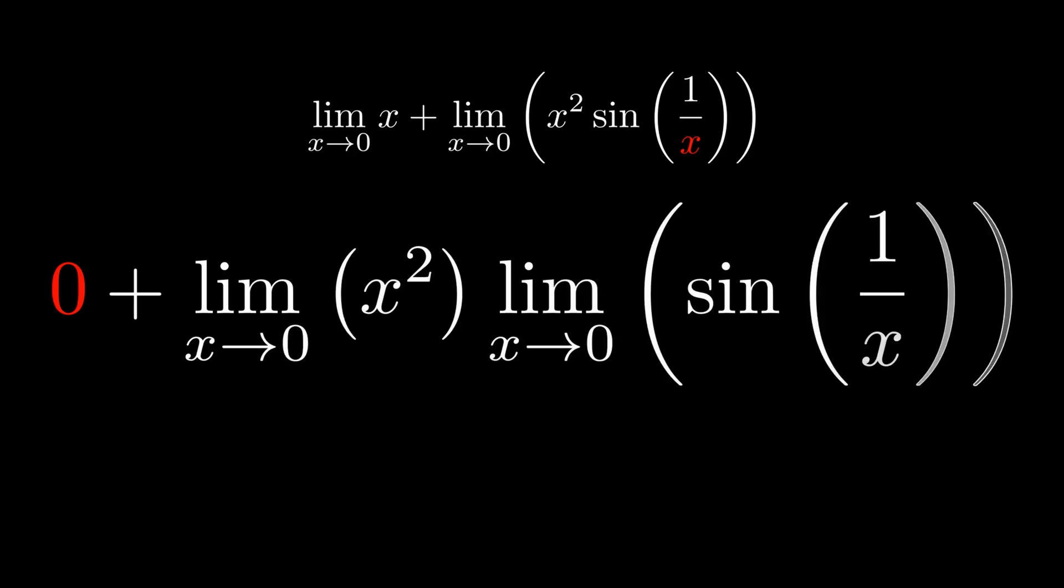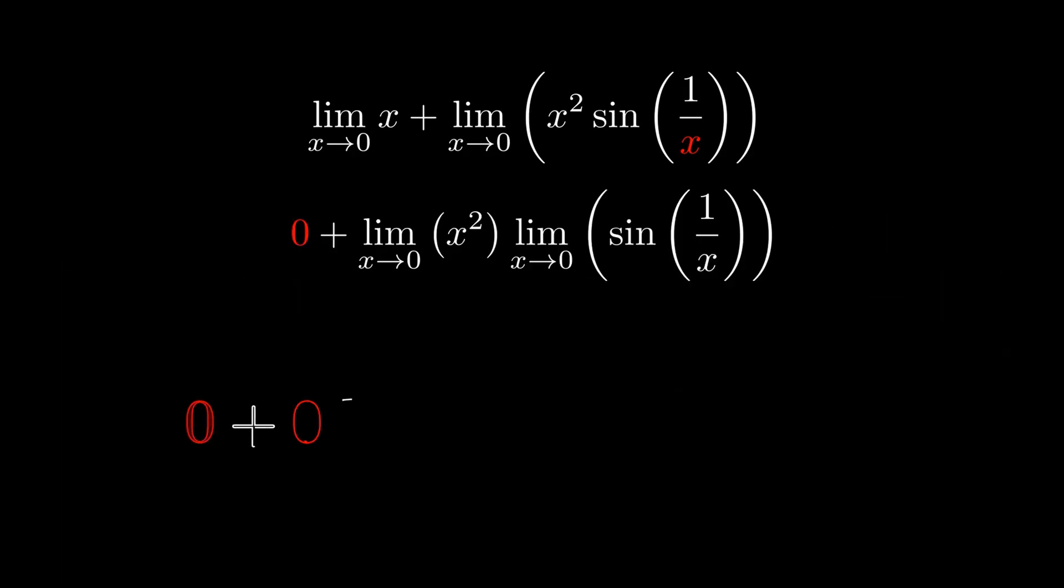Now all we need to do is evaluate the limit as x goes to zero of x squared. Doing so we see that that's clearly zero, and we now no longer need to evaluate the limit as x goes to zero of sine of one over x because anything multiplied by zero is just zero, and we get our final answer which is zero.